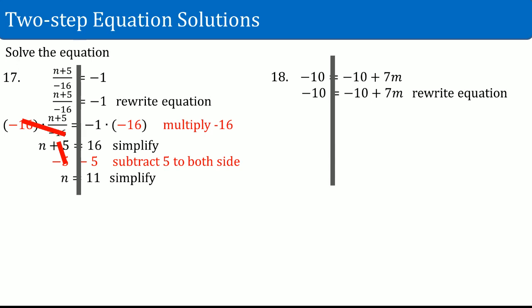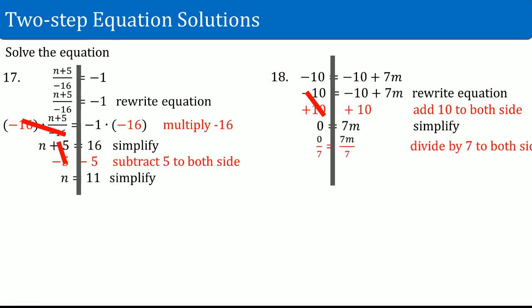Number eighteen: rewrite the equation and draw a line straight down. On the right-hand side you have a negative 10 being added as well as a 7 times m. Deal with the outermost thing, the subtract 10 — add 10 to both sides. It cancels out. Negative 10 plus 10 also cancels out, giving 0. You have 0 equals 7m. The inverse of multiplication is division. Divide by 7 on both sides — 7 over 7 cancels out, leaving m. So m equals 0.